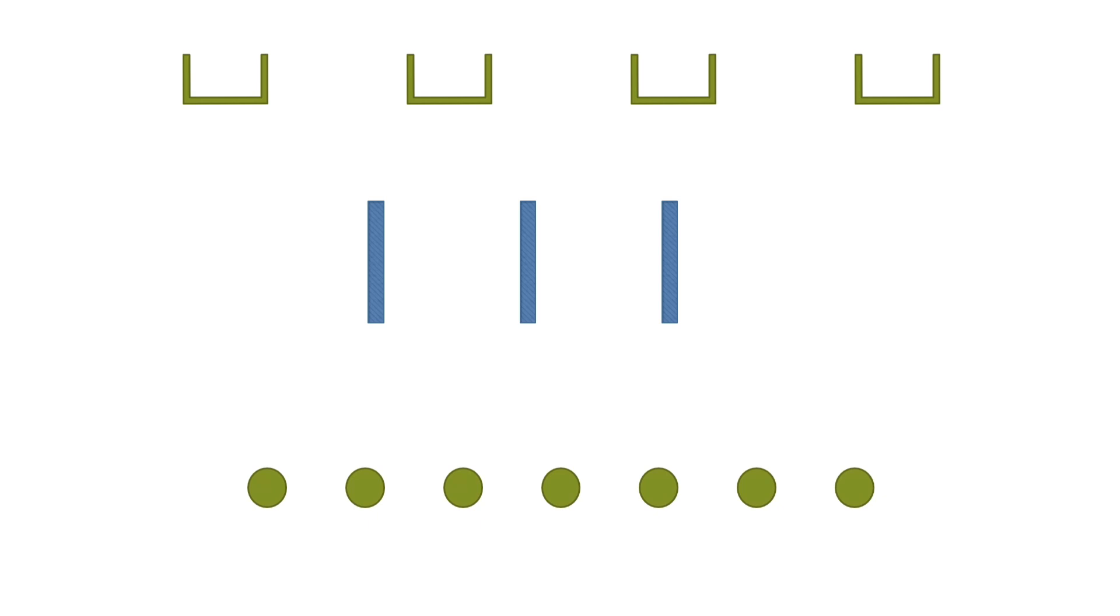Suppose here we have 4 persons only. So we have to use 3 separators. Because 3 separators can separate these objects among 4 groups. Like this. Here the leftmost part will be given to the 1st person. And the part between 1st and 2nd separator will be given to the 2nd person. 2nd and 3rd separator will be given to the 3rd person. And the rightmost part will be given to the 4th person.